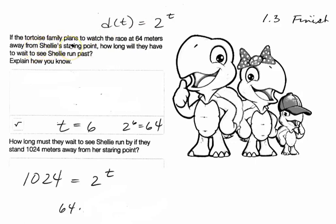Now it says if the tortoise plans to watch the race at 64 meters, how long to wait until Shelley runs past. Explain how you know. Well, we know that the distance is 64, and on the other side of the equation it's just 2 to the t, so we need to find the t that makes this true.